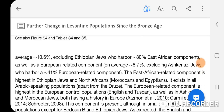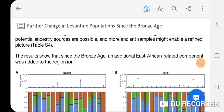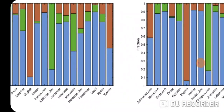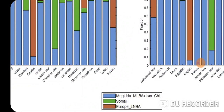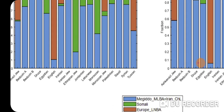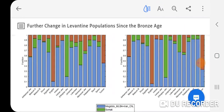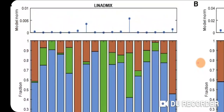I'm going to show you this table. Basically the mixture is: Megiddo middle-to-late Bronze Age plus Iran Chalcolithic in blue, Somali representing East African in green, and Europe LNBA in brown. So blue is essentially Canaanite/Levant Middle Eastern, Somali is East African, and Europe is brown. Let's take a look — this is with LADMIX.